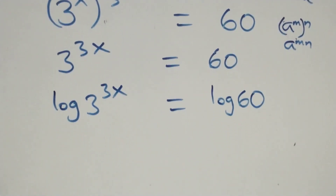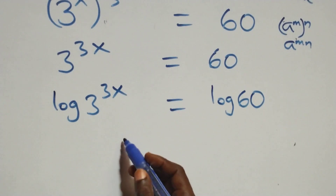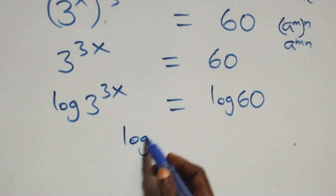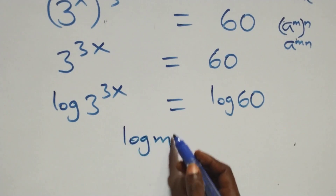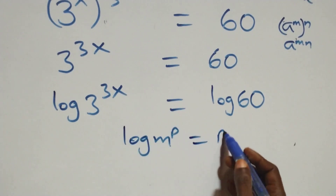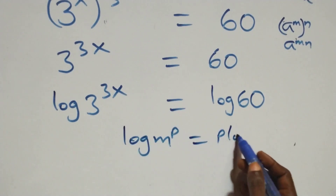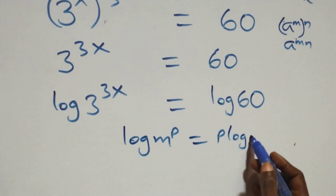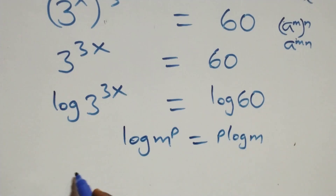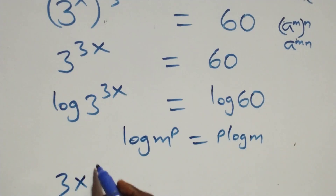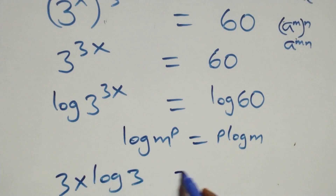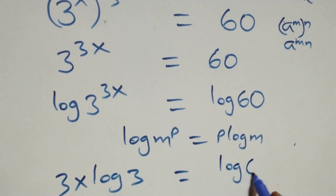The next step: we apply the power rule of logarithms. When we have log m raised to power p, this is the same thing as p log m. So what we have here becomes three x times log three equals log sixty on this side.